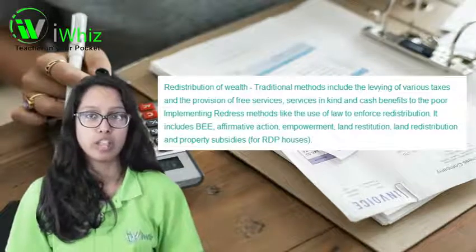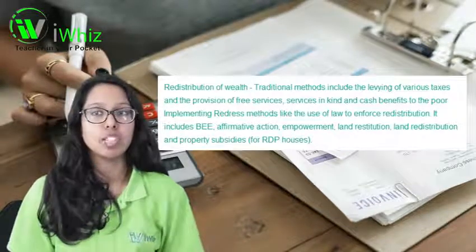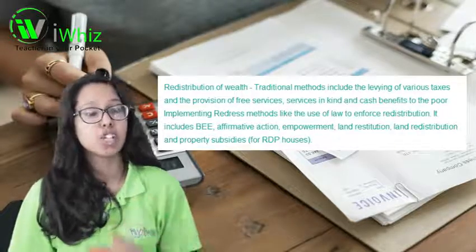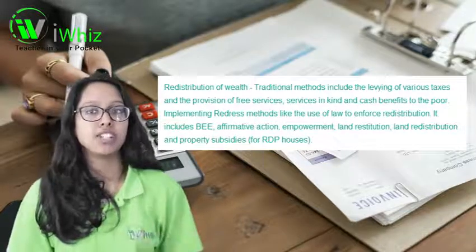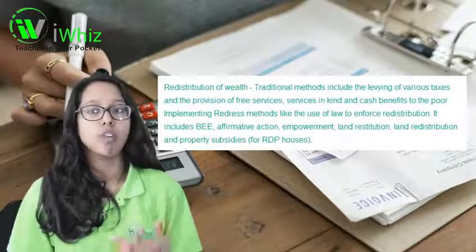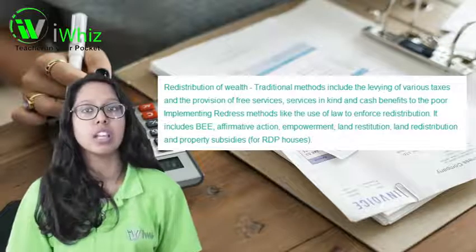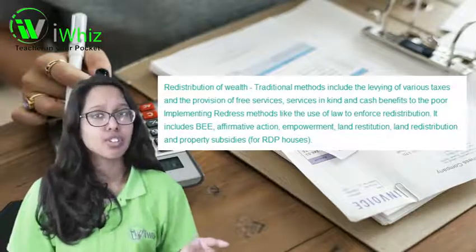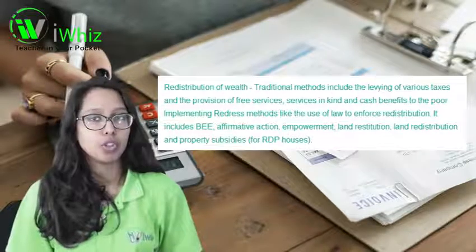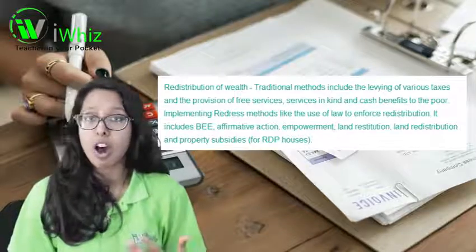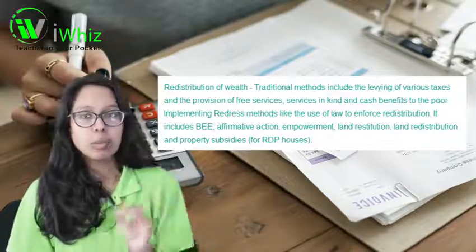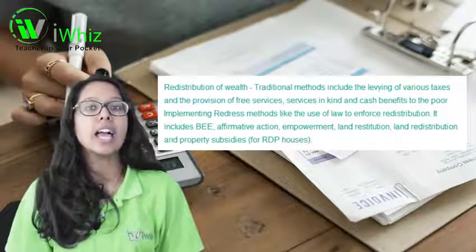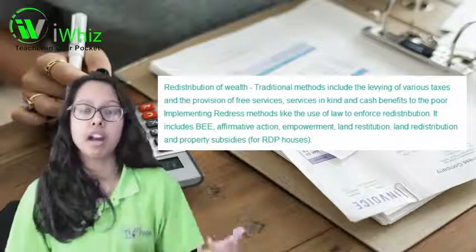Looking at the redistribution of wealth: traditional methods include levying various taxes and providing free services — services in kind and cash benefits to the poor. Implementing redress methods through law to enforce redistribution includes BEE, Affirmative Action, Empowerment, Land Restitution, Land Redistribution and Property Subsidies, for example RDP houses. The government can use many ways to improve income distribution and help the economy overcome market failure.